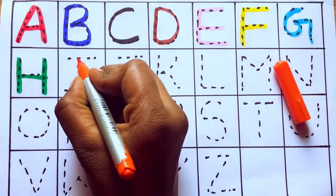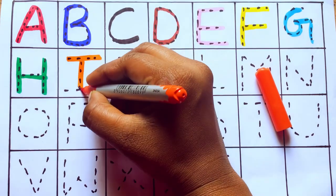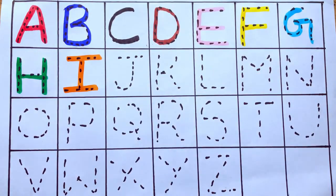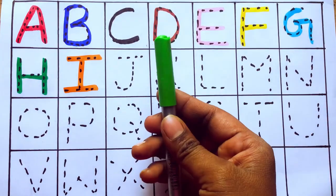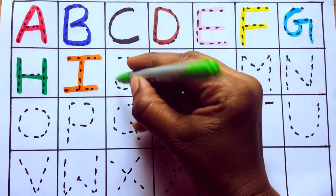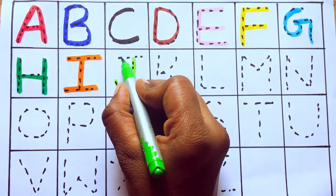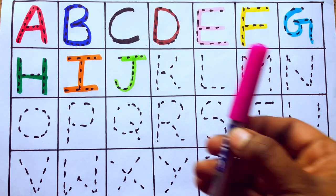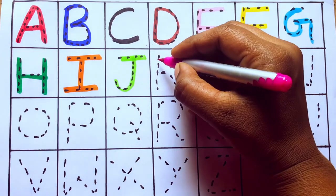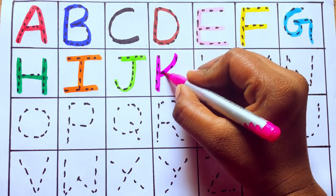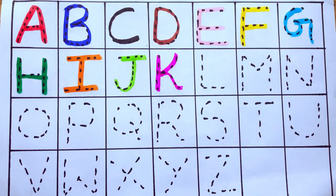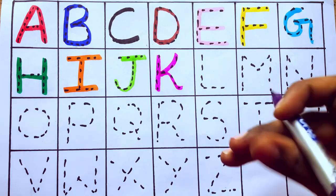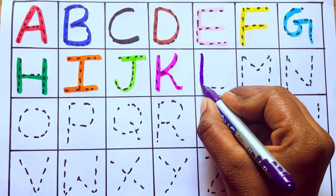Yellow color. F for fish, sky blue color. G for goat, green color. H for hat, orange color. I for ink, light green color. J for jar, pink color. K for kite.